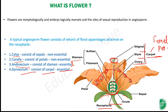Gynoecium consists of carpels, which are essential. Essential and non-essential — what does this mean? When a flower is converted into a fruit, you will not see a sepal or a petal. This is why they are non-essential. We don't need petals and sepals — we need female gametes and male gametes. Male gametes and female gametes are essential.